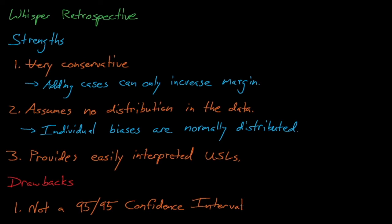While Nureg 6698 prefers USLs that come attached with a 95-95 confidence interval, it's not completely necessary to provide the USL in this form. In fact, you can probably argue that the whisper USL estimates are so conservative that they're even better than a 95-95 confidence interval.